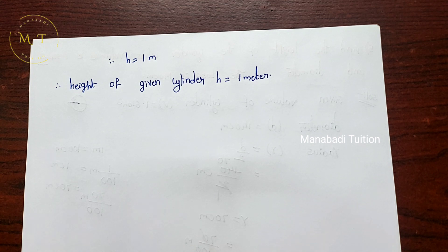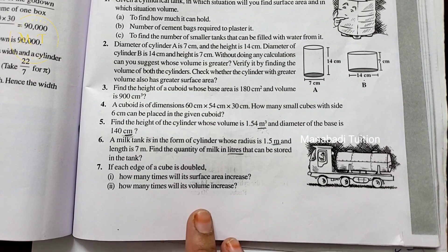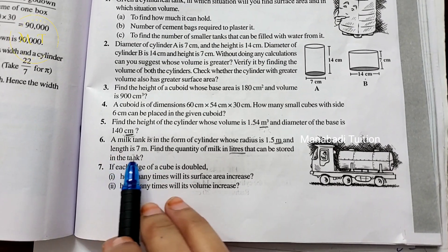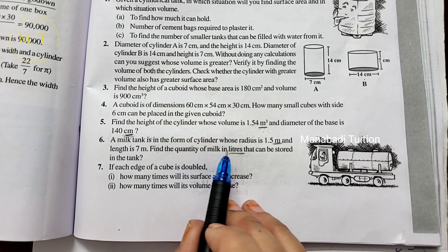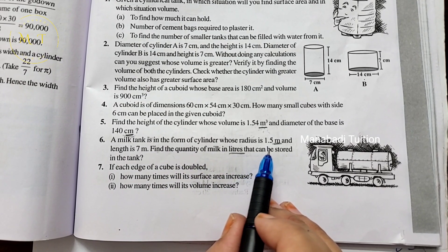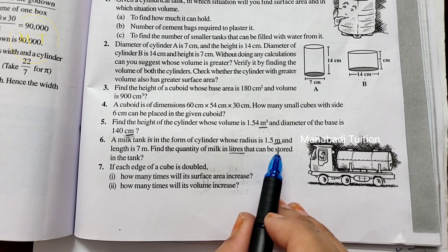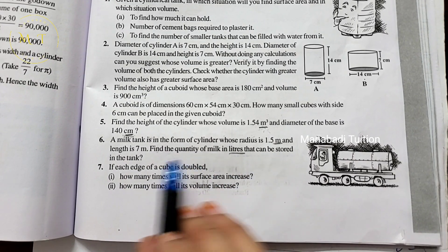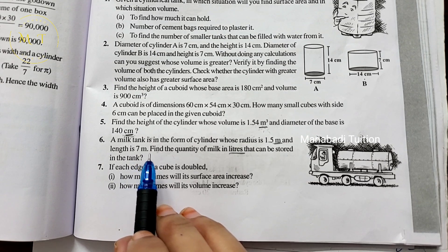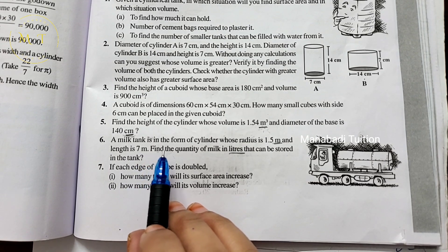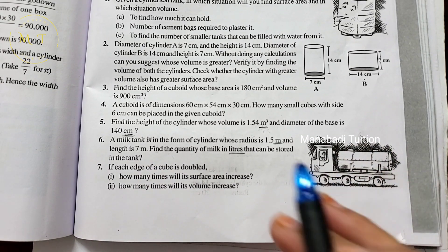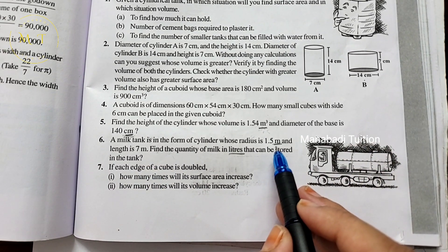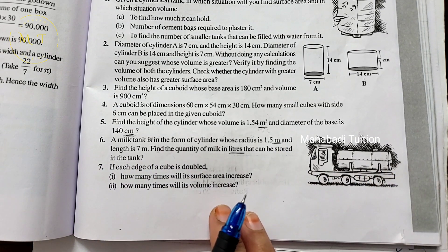Sixth problem: A milk tank is in the form of a cylinder whose radius is 1.5 meters and length is 7 meters. The milk tank is in a cylindrical shape with radius and length (height) given.